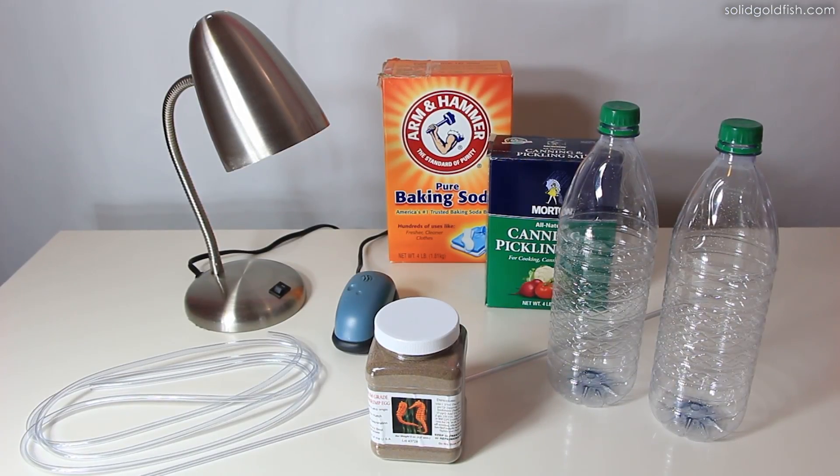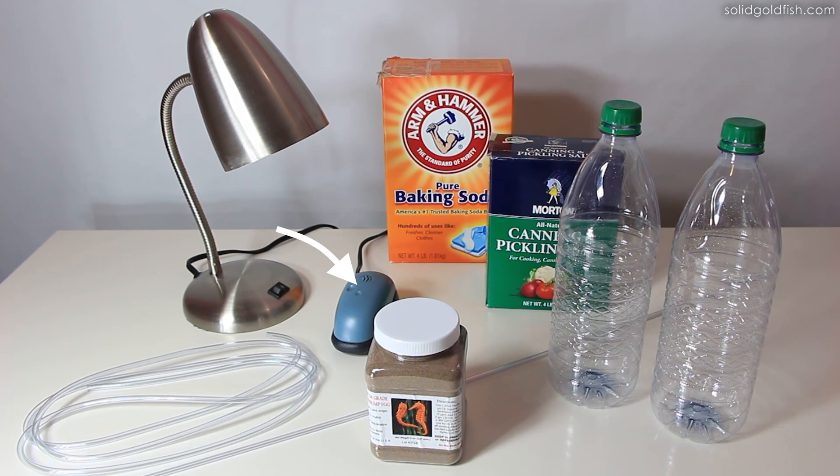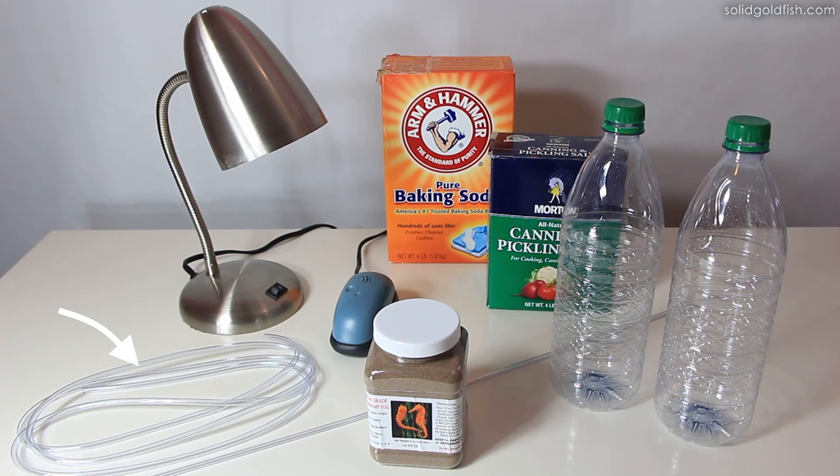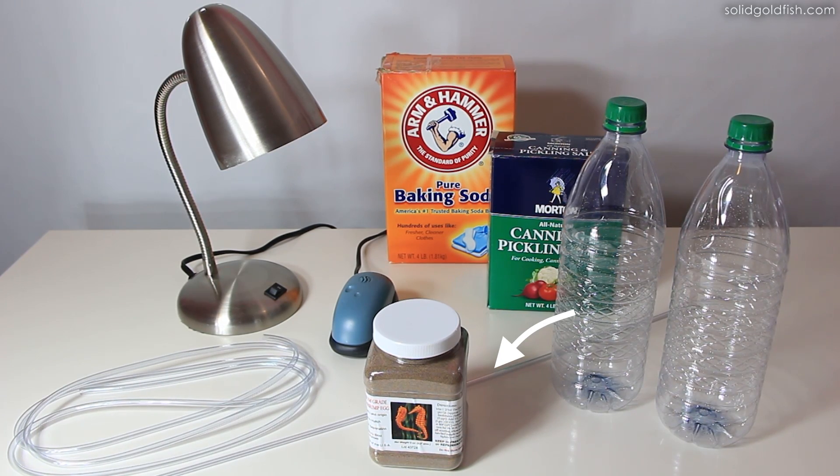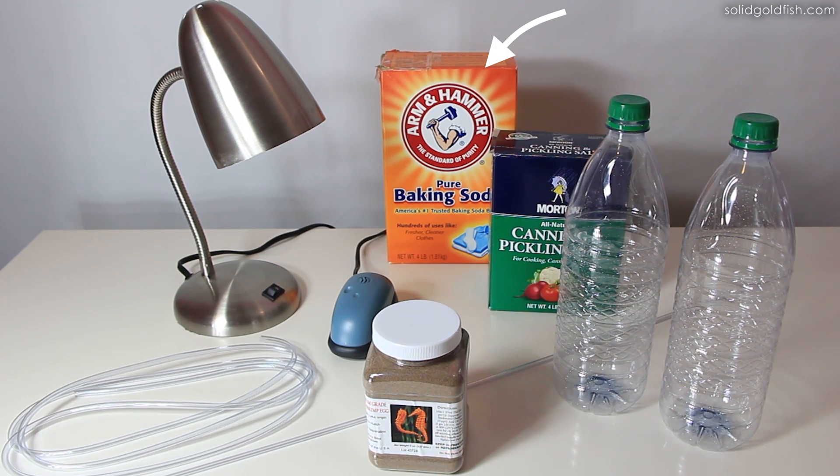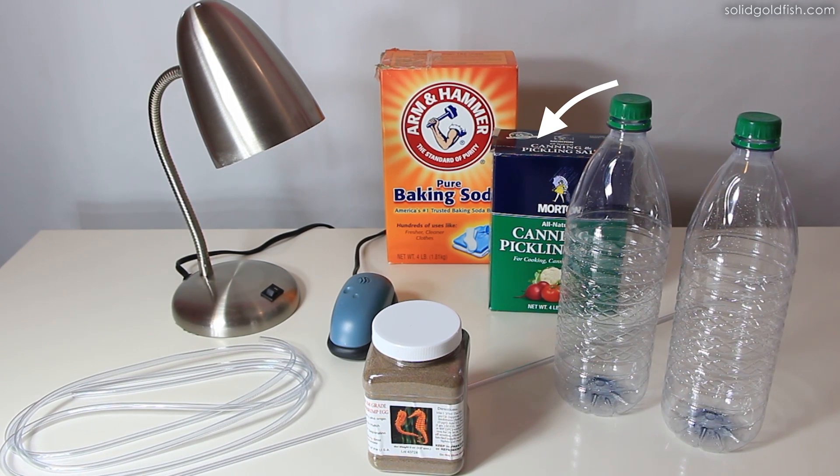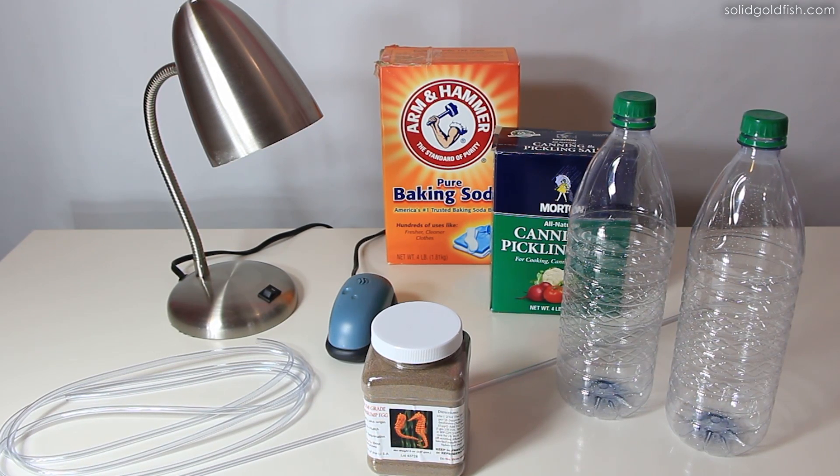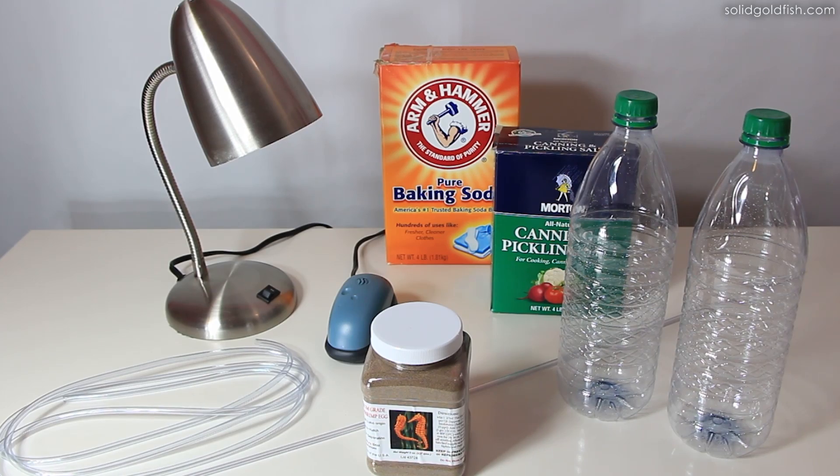Supplies you'll need are two one-liter bottles, an air pump, a lamp, flexible airline tubing, rigid airline tubing, brine shrimp eggs, baking soda and salt. For salt, you can use kosher salt, canning and pickling salt, rock salt, or any non-iodized and additive-free salt.